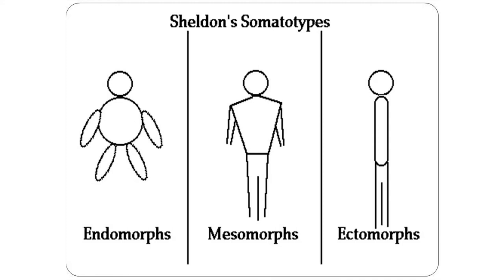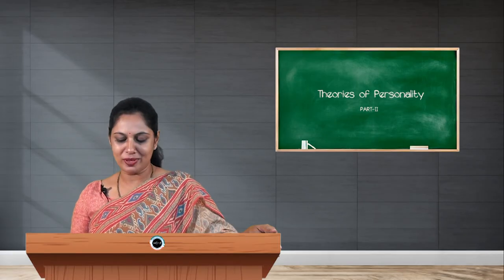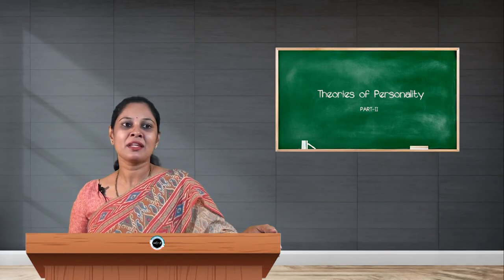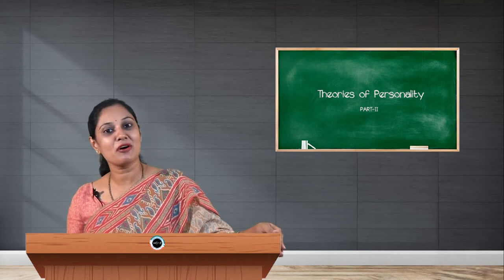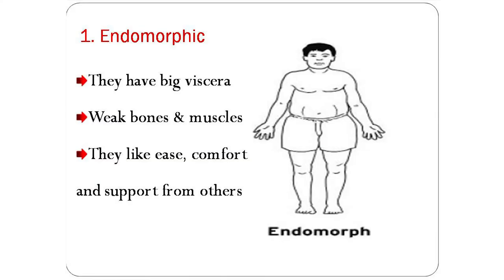The PPT shows three pictures. The left-centered picture is endomorphs — they are a little heavy-built. Mesomorphs in the middle are slightly medium-built, and the right-centered one is called ectomorphs. That is the third build we can see. Now, who are these endomorphic people with endomorphic type of personality?